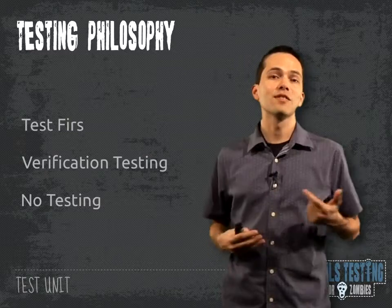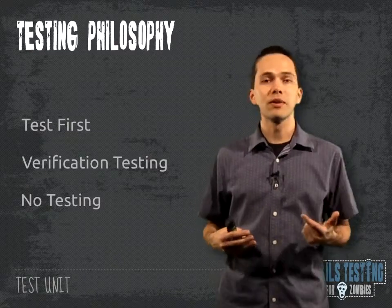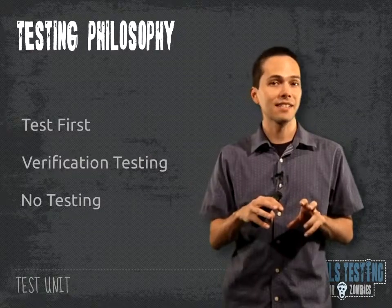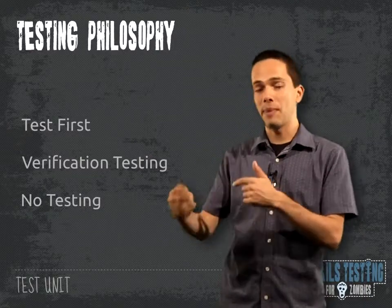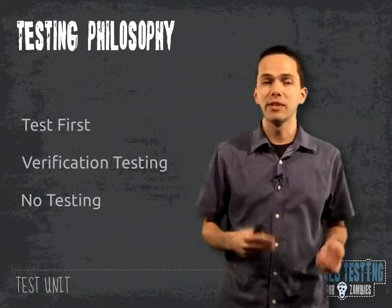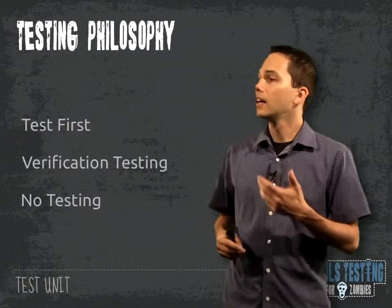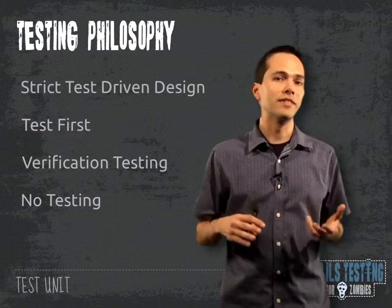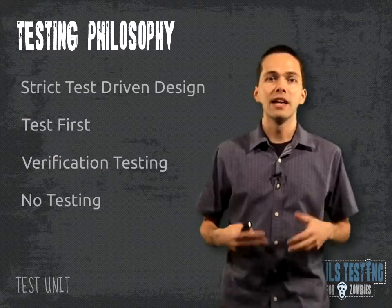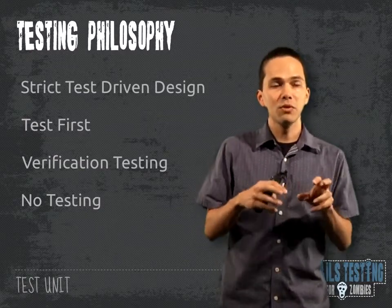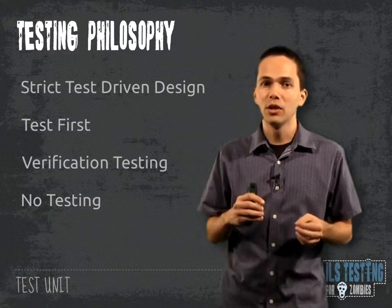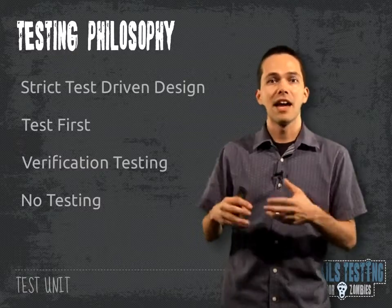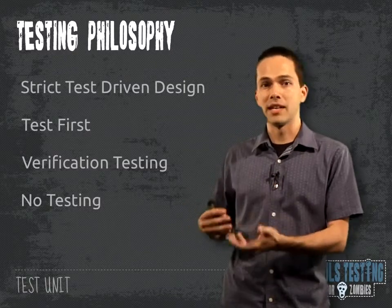The next step is test first. This is what we're going to be going through in this course, where we write a test — it's a failing test — we then write enough code to make the test pass, and then we reflect and see if we need to refactor that code. Lastly, what we're not going over in this course is strict test-driven design, where your tests define the behavior or almost the design of your application, and that defines how your application gets developed and crafted.